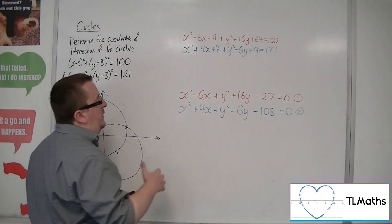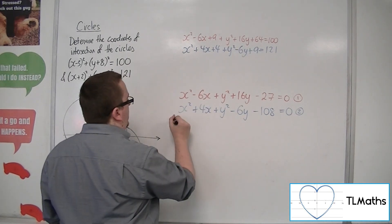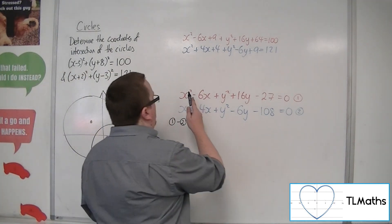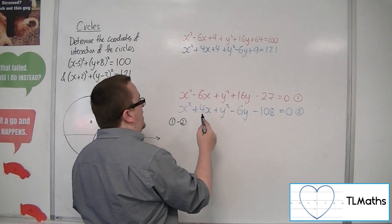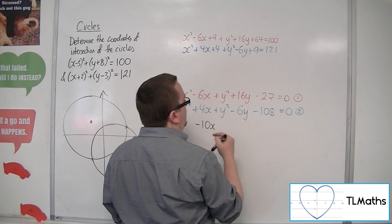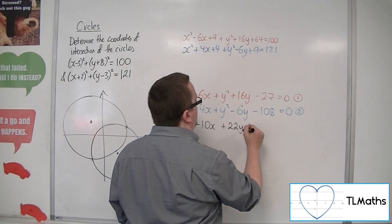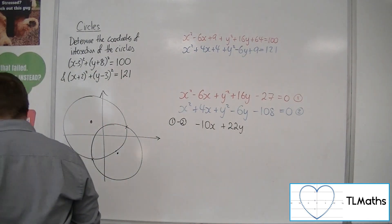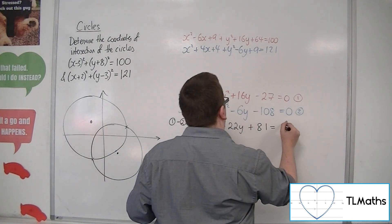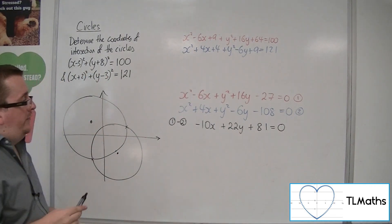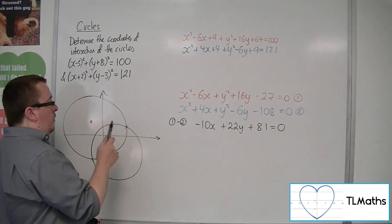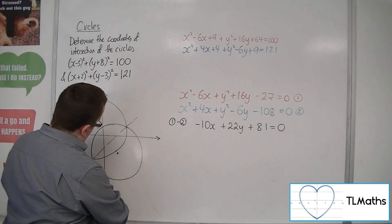What I'm going to do now is do equation 1 take away equation 2. This will eliminate the x squareds and the y squareds. So x squared minus x squared is 0; minus 6x take away 4x is minus 10x; y squared minus y squared is 0; 16y take away minus 6y is plus 22y; minus 27 take away minus 108, so minus 27 plus 108 is 81, equals 0. This is actually the equation of the line that joins those two coordinates.